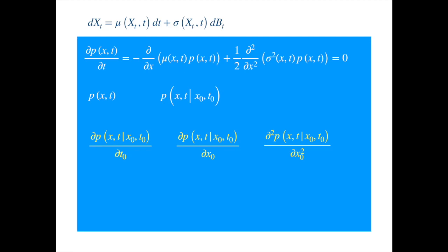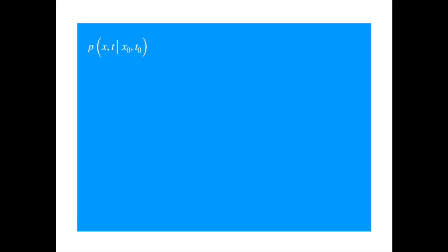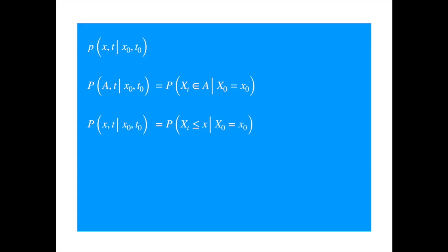Now we switch to the conditional probability as opposed to the probability density for the derivation of the backward equation. We represent the conditional probability distribution by capital P. So this P represents the probability of finding the process in an interval a, given that it started at x₀. And most of the time you would see this written in terms of the real number, so this represents the probability of x at time t being less than or equal to x. We know the probability is just the integral of the probability density — the probability of the process going from x₀ to z at time t, integrated over all values of z less than or equal to x.